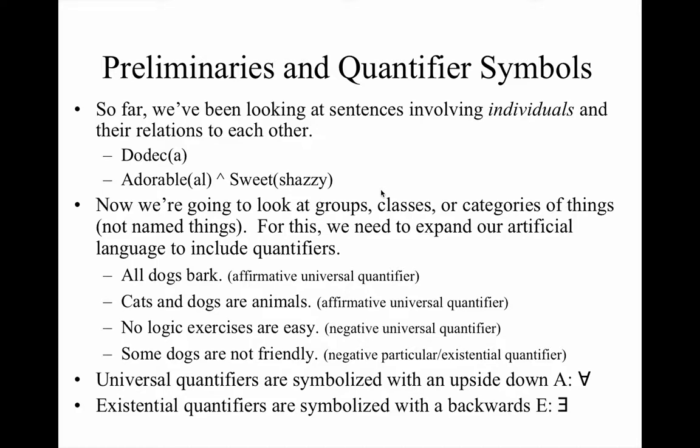A sentence involving an individual constant exclusively is called a singular sentence. So whether your sentence is simple or atomic — 'A is a dodec' — or the sentence is compound — 'Al is adorable and Shazi is sweet' — it's still the case that the sentences are about individually named things. But not all of our sentences involve individually named things.